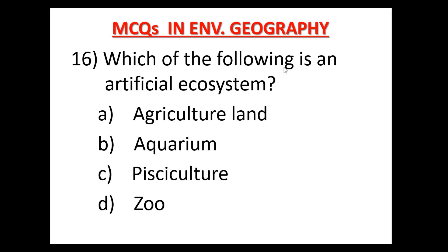Question number 16: Which of the following is an artificial ecosystem? कौन कृत्रिम पारिस्थितिकी तंत्र है? Option A: Agriculture Land, Option B: Aquarium, Option C: Pisciculture, Option D: Zoo. Aquarium is an artificial ecosystem. Option B is the correct answer.